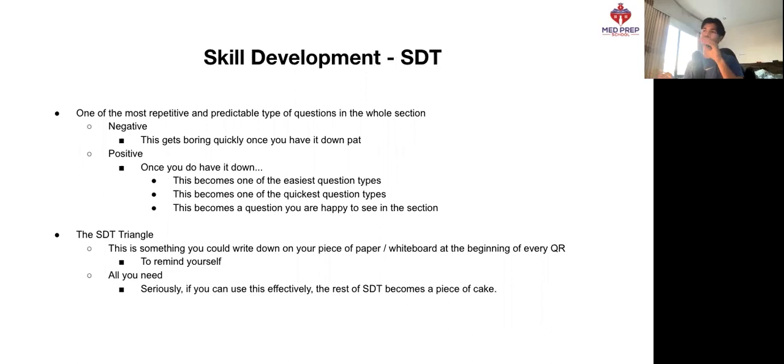The only thing you really need is the speed distance time triangle. This is something you could write down on your piece of paper or whiteboard at the beginning of every single QR section that you do, just to remind yourself when a speed distance time question does come up. This speed distance time triangle is literally all you need. Seriously, if you can use this effectively, then the rest of speed distance time becomes a piece of cake.